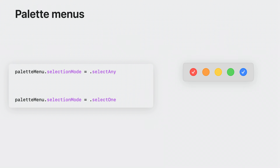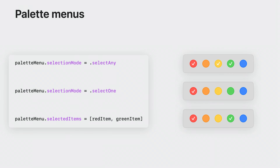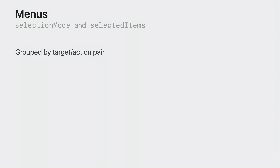There are a couple of selection modes to choose from. SelectAny toggles the state of individual menu items but will not change the state of other items in the group. Select1 will set the selected menu item's state to on while setting other members of the group's state to off. You can also get or set which items are in the on-state via the selectedItems property. Note that selection mode and selectedItems work by organizing menu items that have the same target-action pair into a logical group.